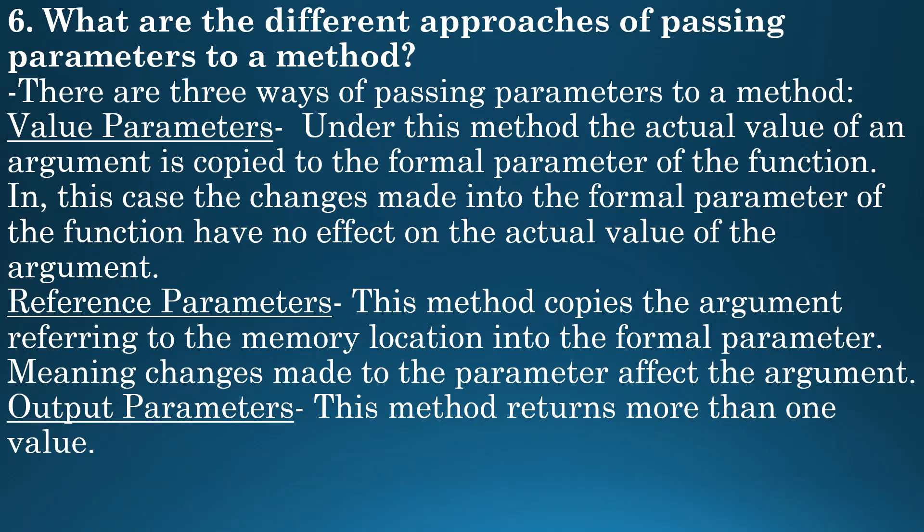What are different approaches of passing parameters to a method? There are three ways. First is value parameters — the actual value of an argument is copied to the formal parameter of the function. In this case, the changes made to the formal parameter have no effect on the actual value of the argument.